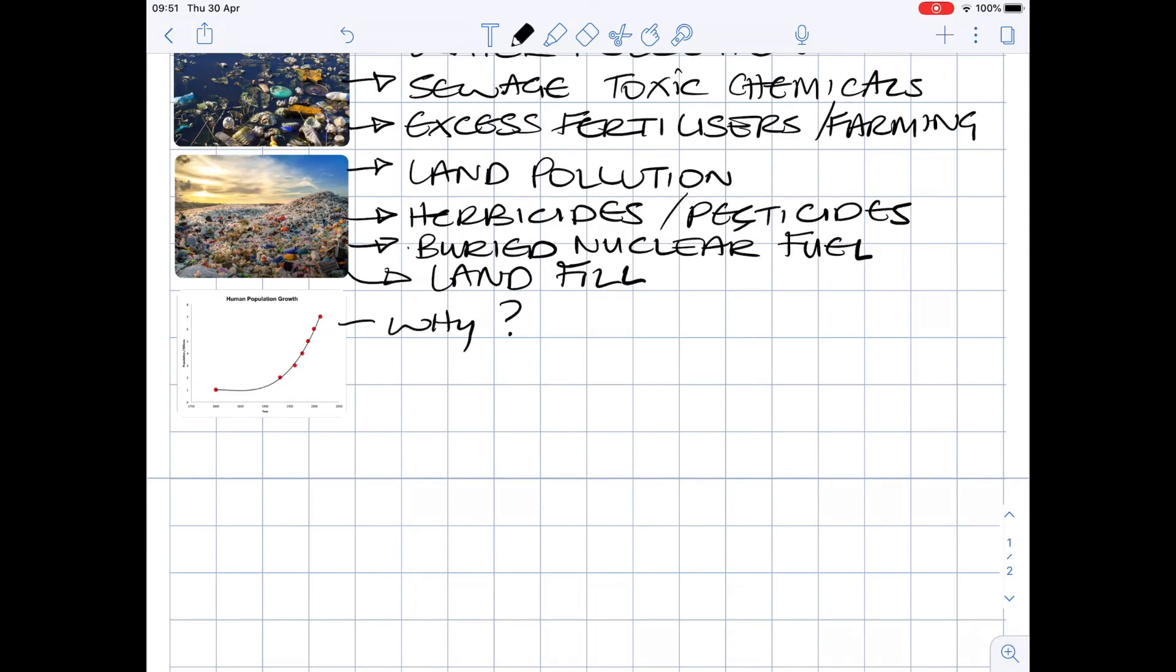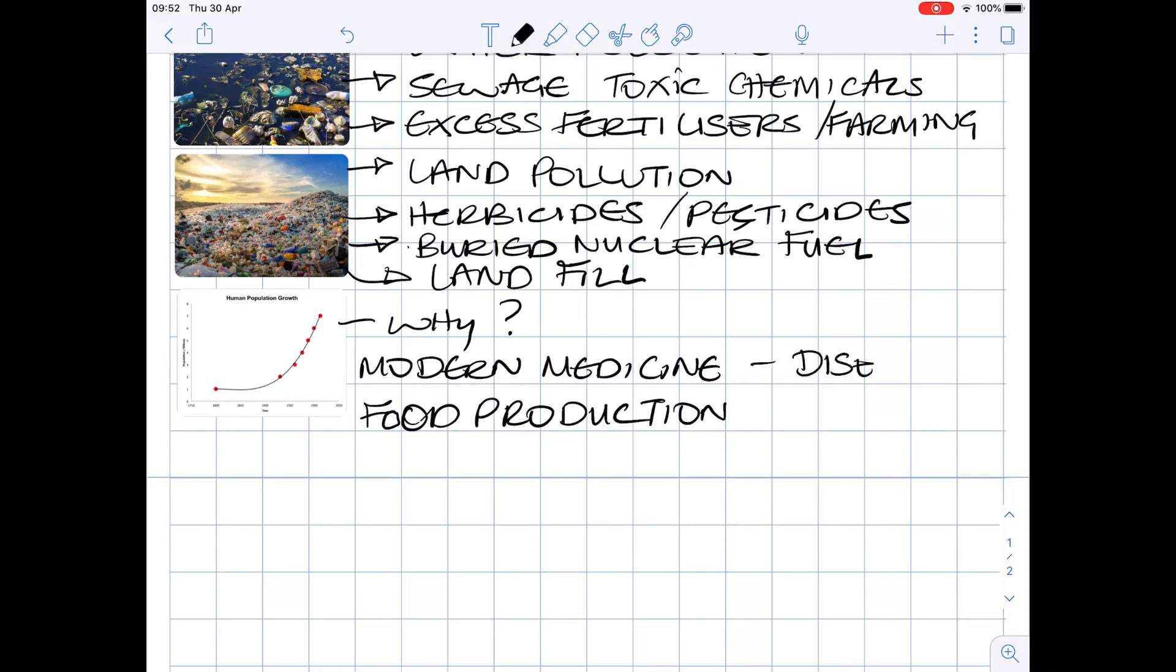Why do you think the human population has been rapidly expanding? Modern medicine and agricultural methods are the underlying causal factors of this trend, due to their role in greatly reducing deaths caused by disease and hunger.